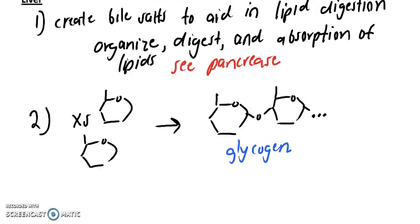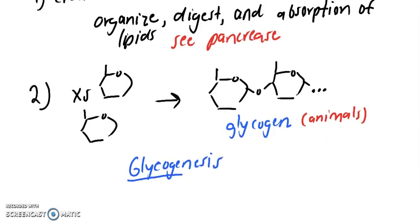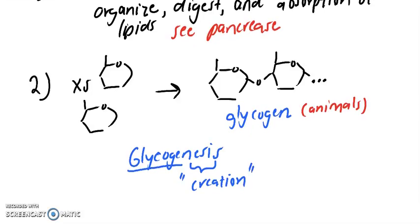This is glycogen, a storage form for animals. This process of creating glycogen, we call this glycogenesis, which means glycogen creation. So we are creating glycogen.